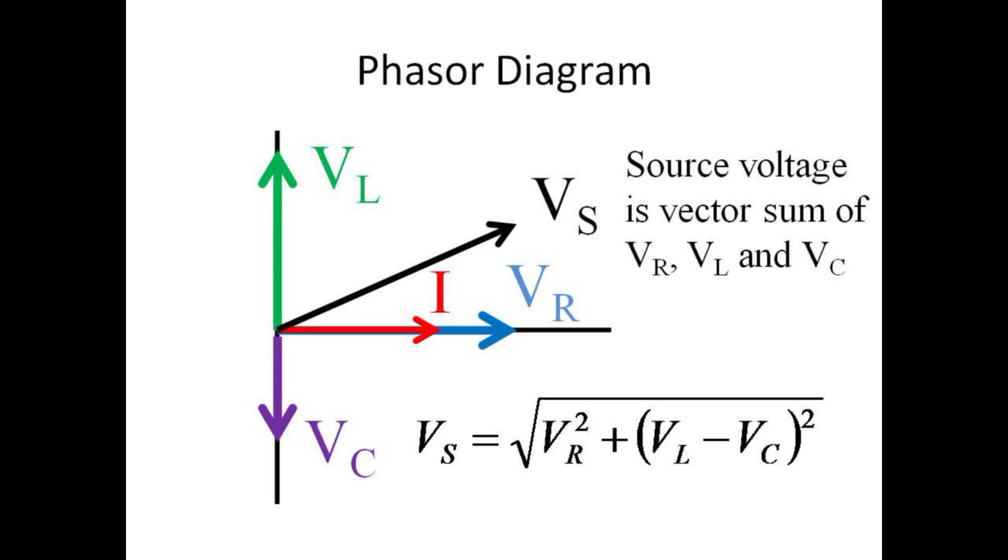According to Kirchhoff's loop rule, the voltage from the source is equal to the sum of the voltages across the resistor, inductor, and capacitor. We can't just add the maximum values for these voltages, however, since these are oscillating functions with different phases. The appropriate way to combine these phasor voltages is to add the vectors. The horizontal component of voltage is just V_R, and the vertical component is V_L minus V_C. We then use the Pythagorean theorem to combine the x and y components.